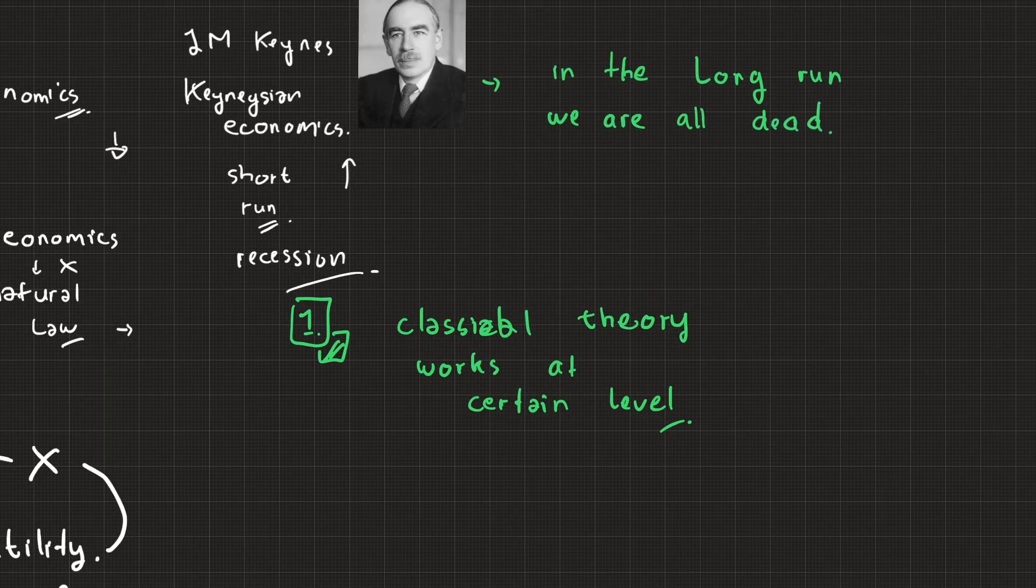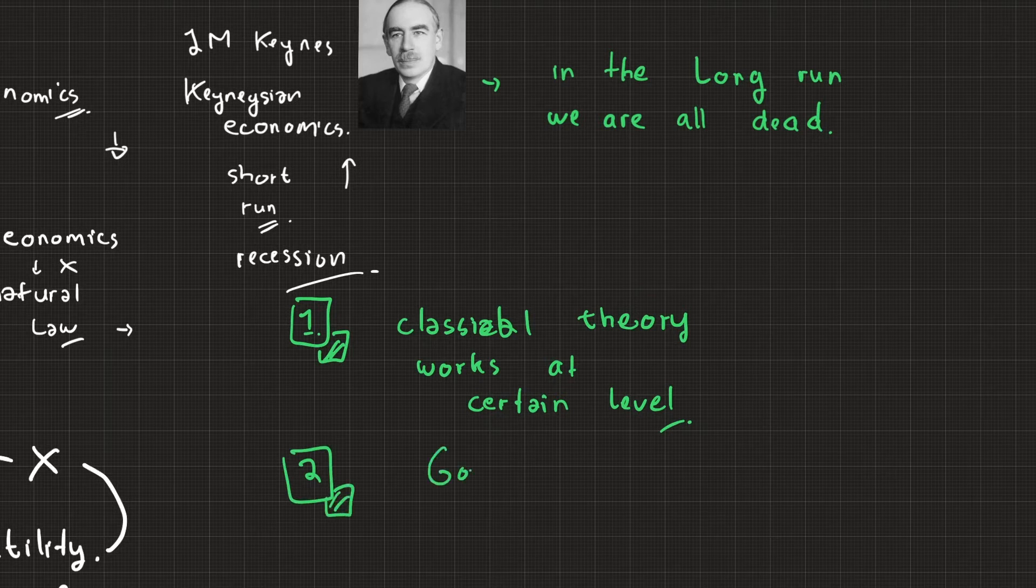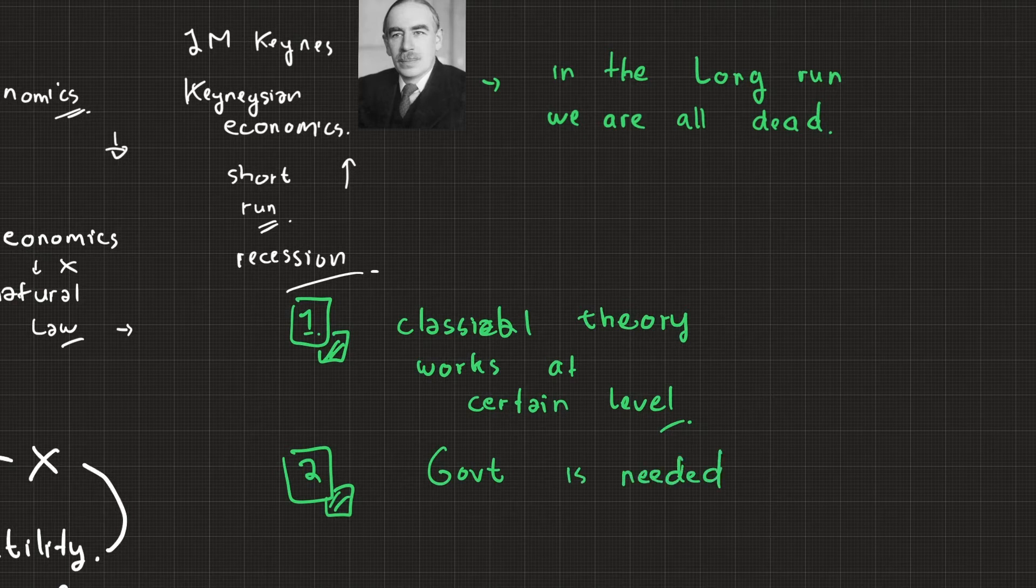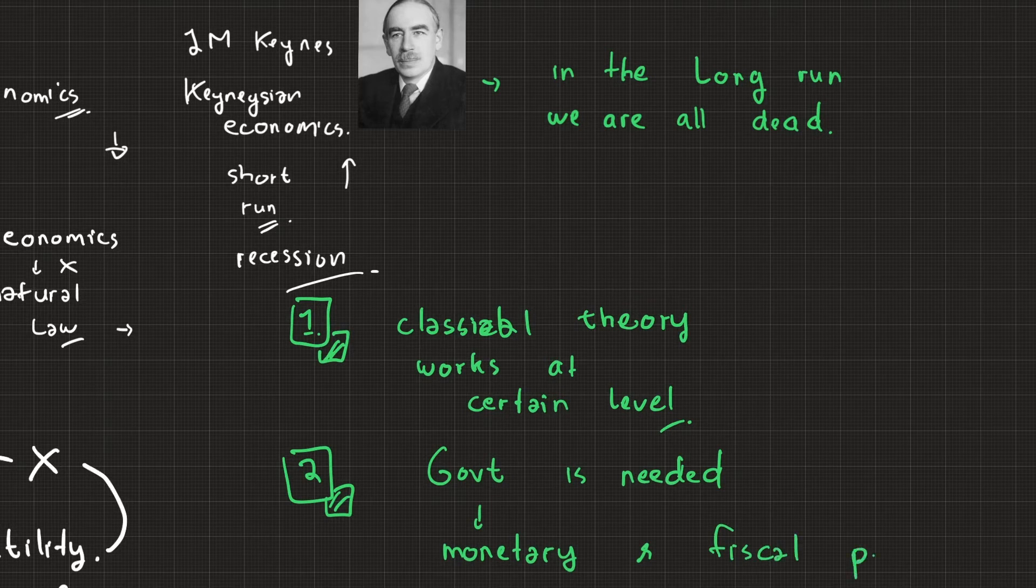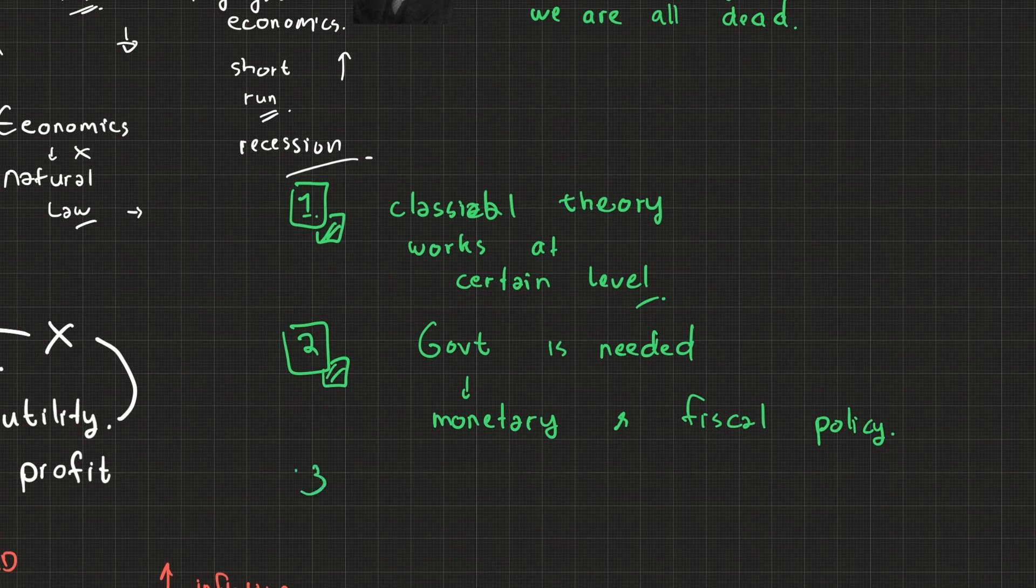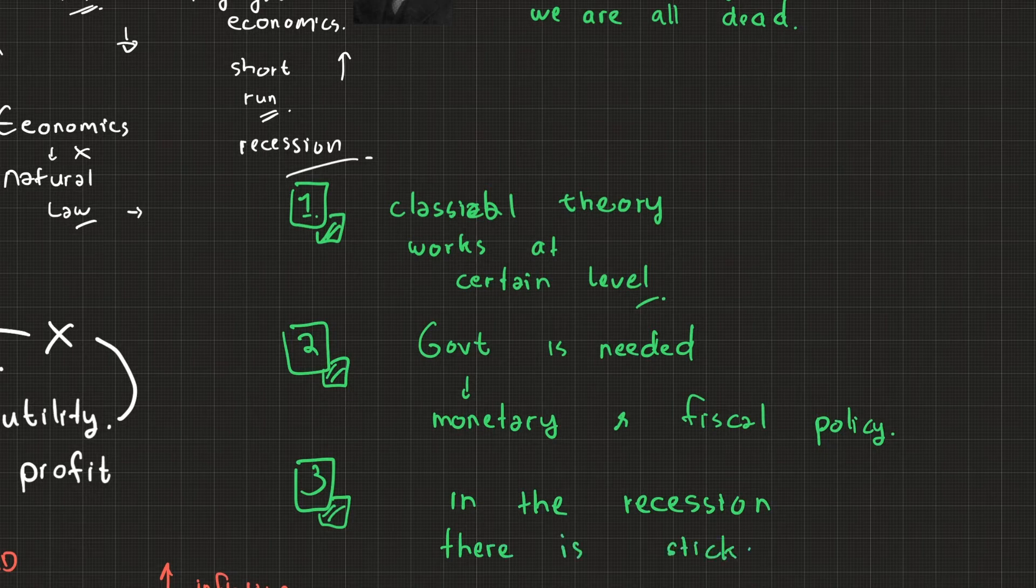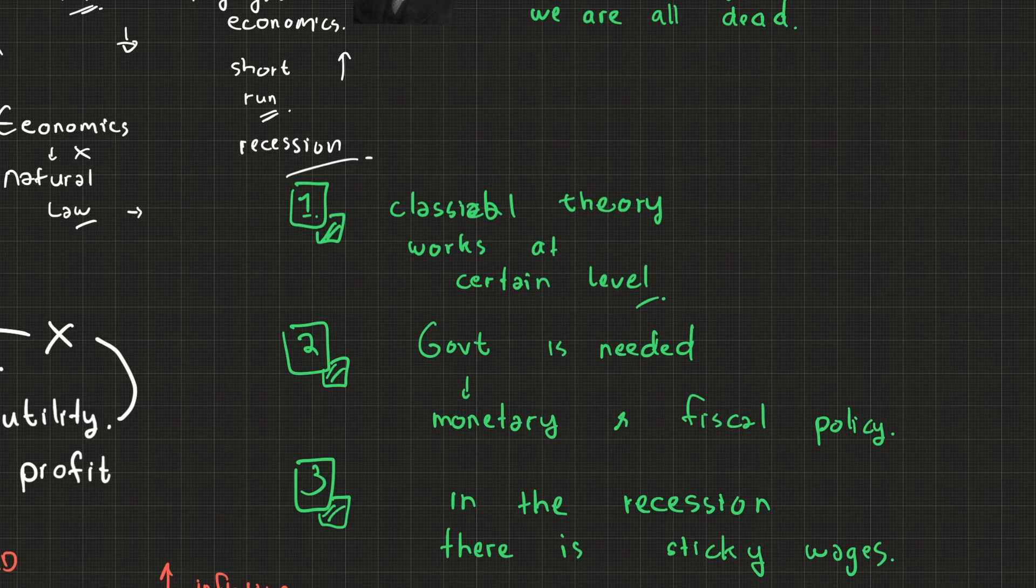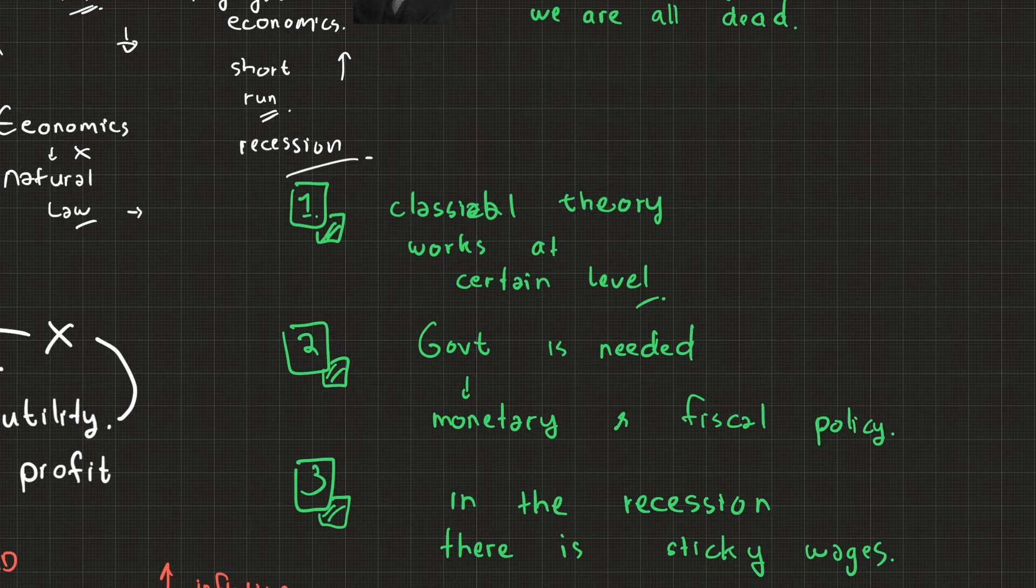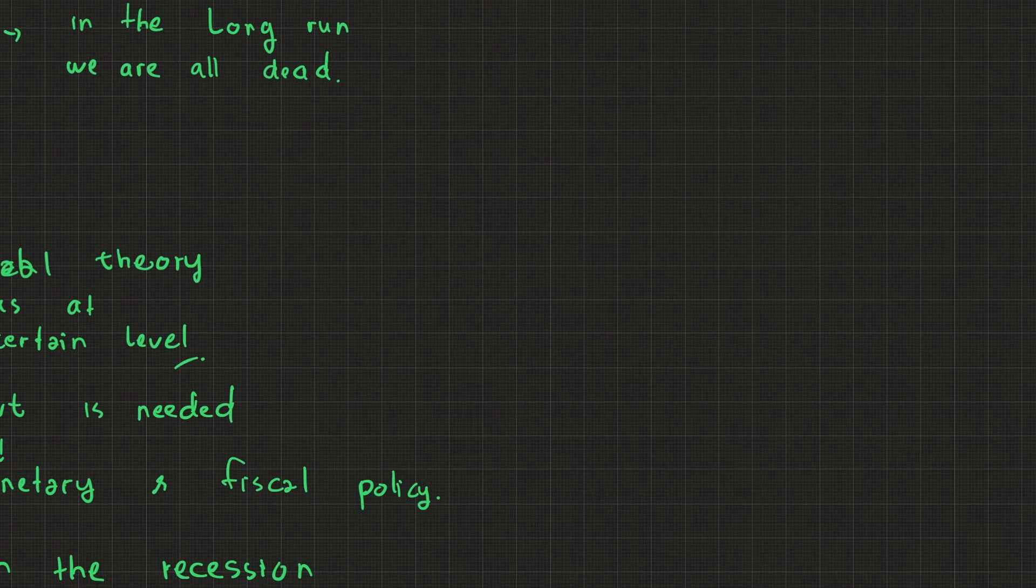There is no long run, no one will live forever. The second one is government is needed through their instrument, which is monetary and fiscal policy, to turn back the recession. There is sticky wages, which means at a certain point people don't want to earn less than some point and production doesn't want to produce products less than a certain price.